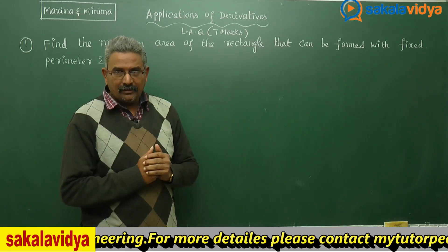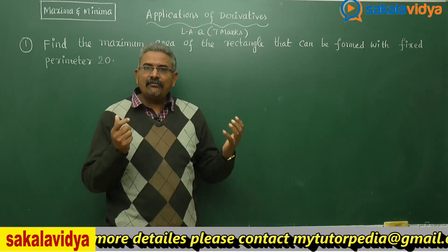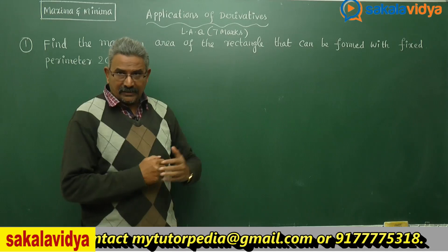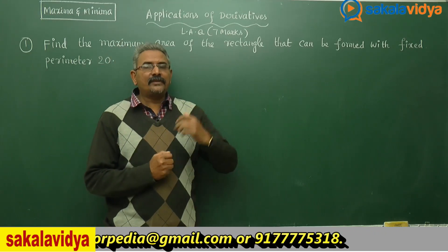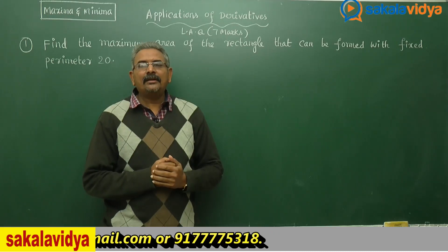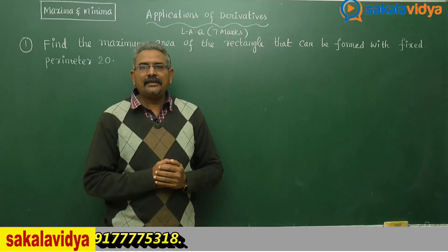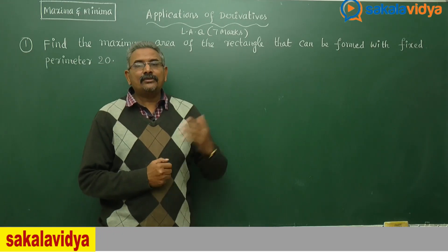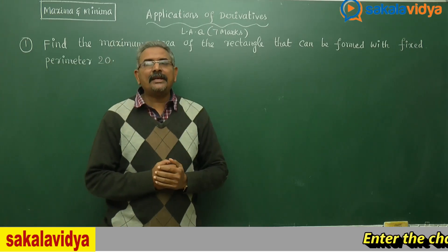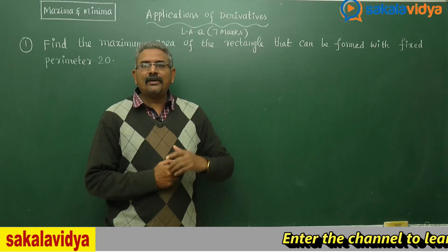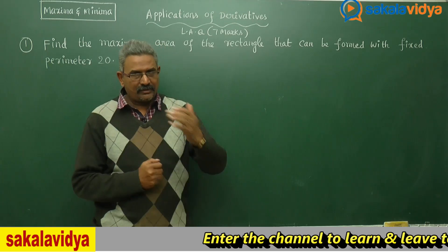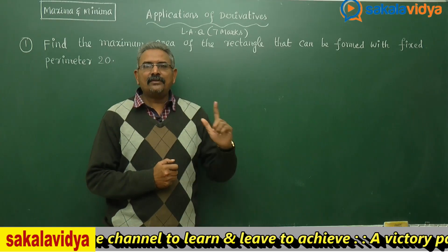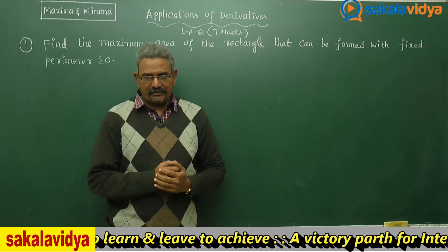Let us assume x and y be the length and breadth of the rectangle. As per the given data, perimeter is equal to 20. We recall the formula: perimeter of a rectangle is 2 times (l + b). Here l stands for x and b stands for y, so 2(x + y) = 20. After simplification, x + y = 10, so y = 10 - x. We call this equation 1.